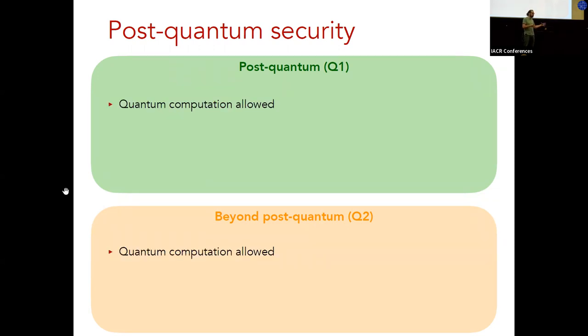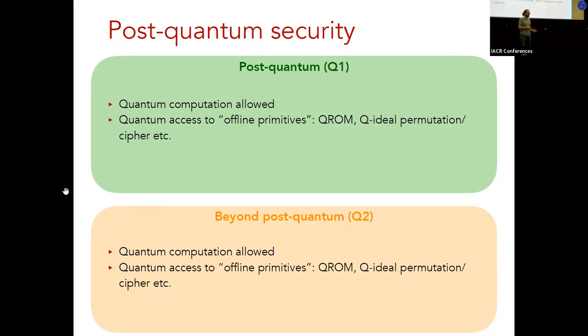First of all, what's common to the two models is obviously that quantum computation is allowed for the adversary. That's kind of the defining property. One implication that this has is that if we look at an idealized model, like, for example, as in the previous talk with the ideal permutation, then we need to allow quantum access to the oracles that represent public cryptographic algorithms. And this is, for example, in the ideal permutation model or in the random oracle model. These oracles represent really an algorithm that you can look up on the Wikipedia or whatever and implement on your quantum computer. So the quantum queries need to be allowed in these algorithms, in these oracles.